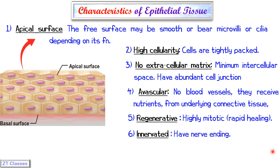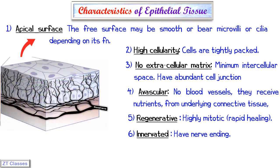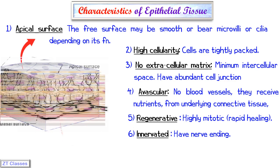The next characteristic is that epithelial tissues are innervated. Blood vessels don't pass through them, but nerve endings are present. These nerve endings, through their dendrites, carry receptors for temperature, pressure, and pain. All these receptors and nerve endings are present in epithelial tissues.